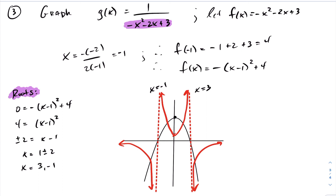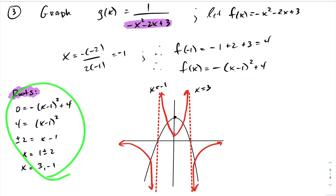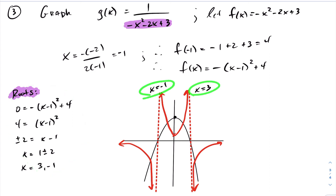This is the same approach as example 2 — we put the function in vertex form and found the roots. The original function f(x) had roots at 3 and negative 1, which become vertical asymptotes for the reciprocal. f(x) was increasing until the vertex at 0, so the reciprocal is decreasing. Then f(x) decreased from 0 to infinity, and the reciprocal became increasing, excluding the vertical asymptotes.